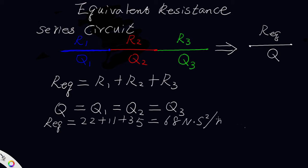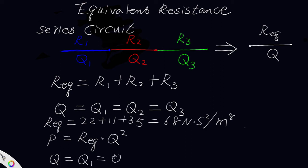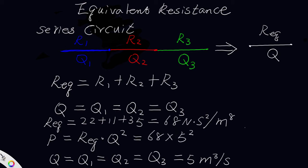Now we are asked to calculate the pressure drop in this set of series airways. The pressure drop equals R-equivalent times Q squared. Q equals Q1, and they are all the same: Q2 equals Q3 equals 5 cubic meters per second. Therefore, pressure drop equals 68 times 5 squared, which equals 1700 Pascal.